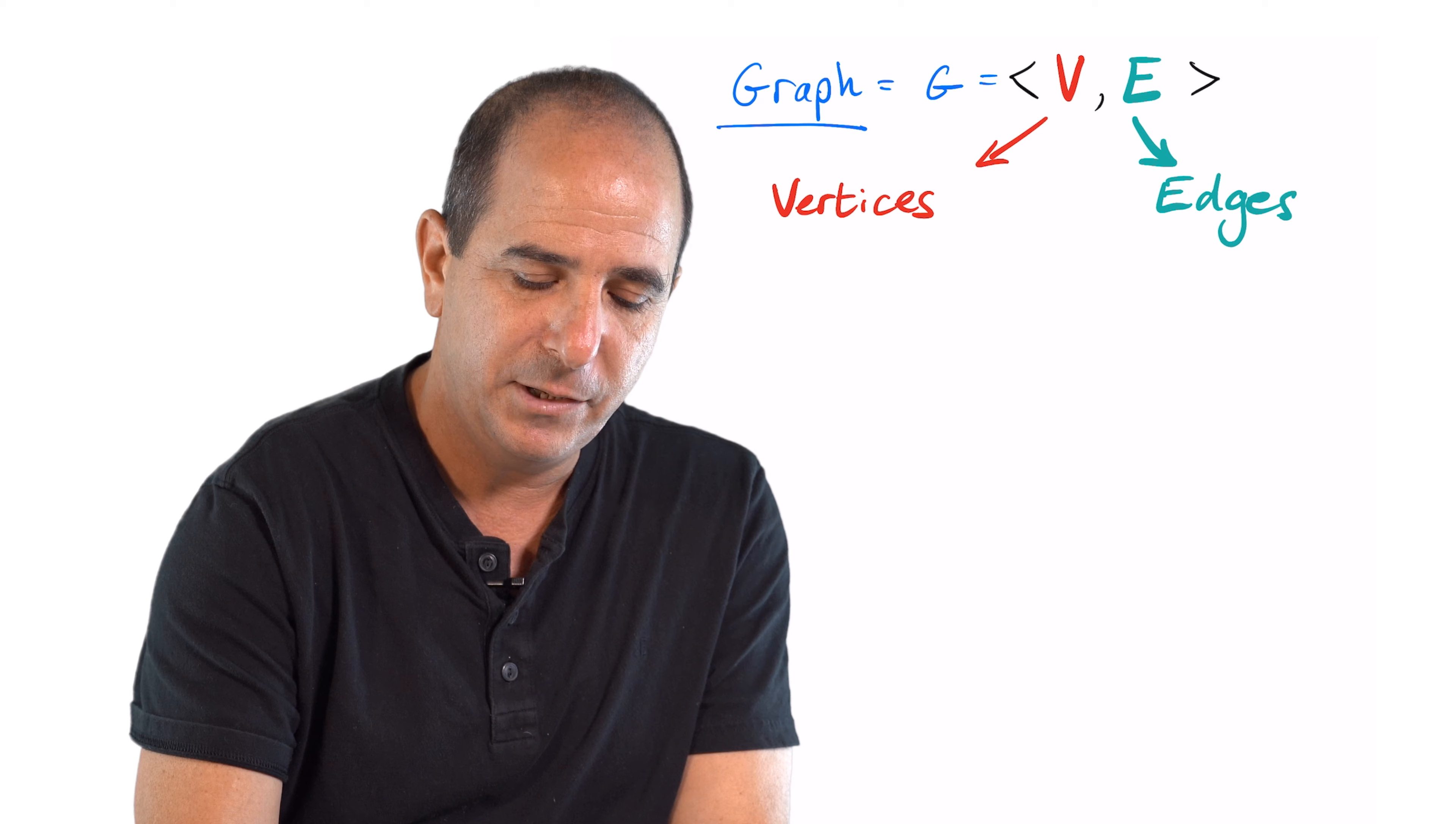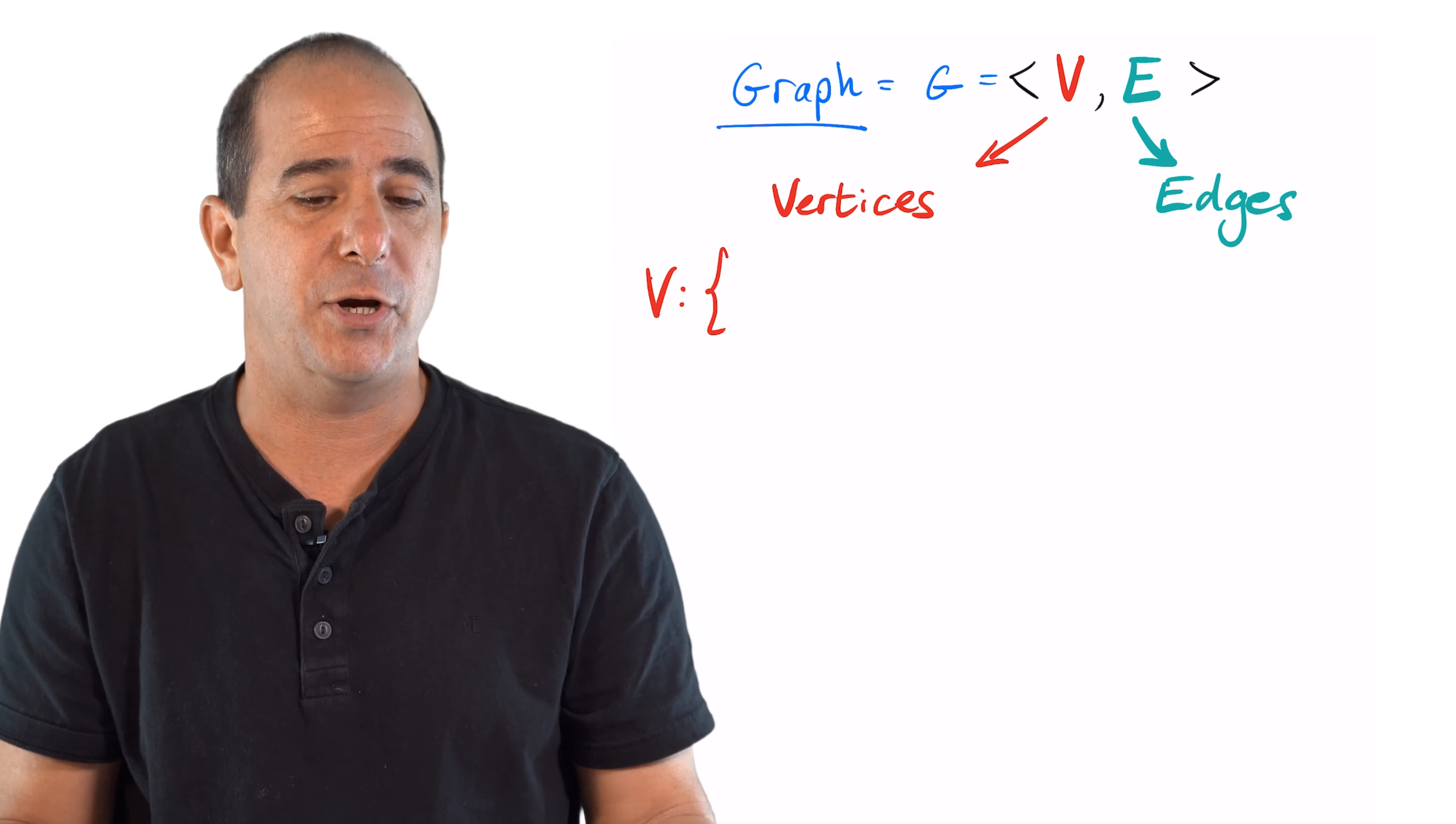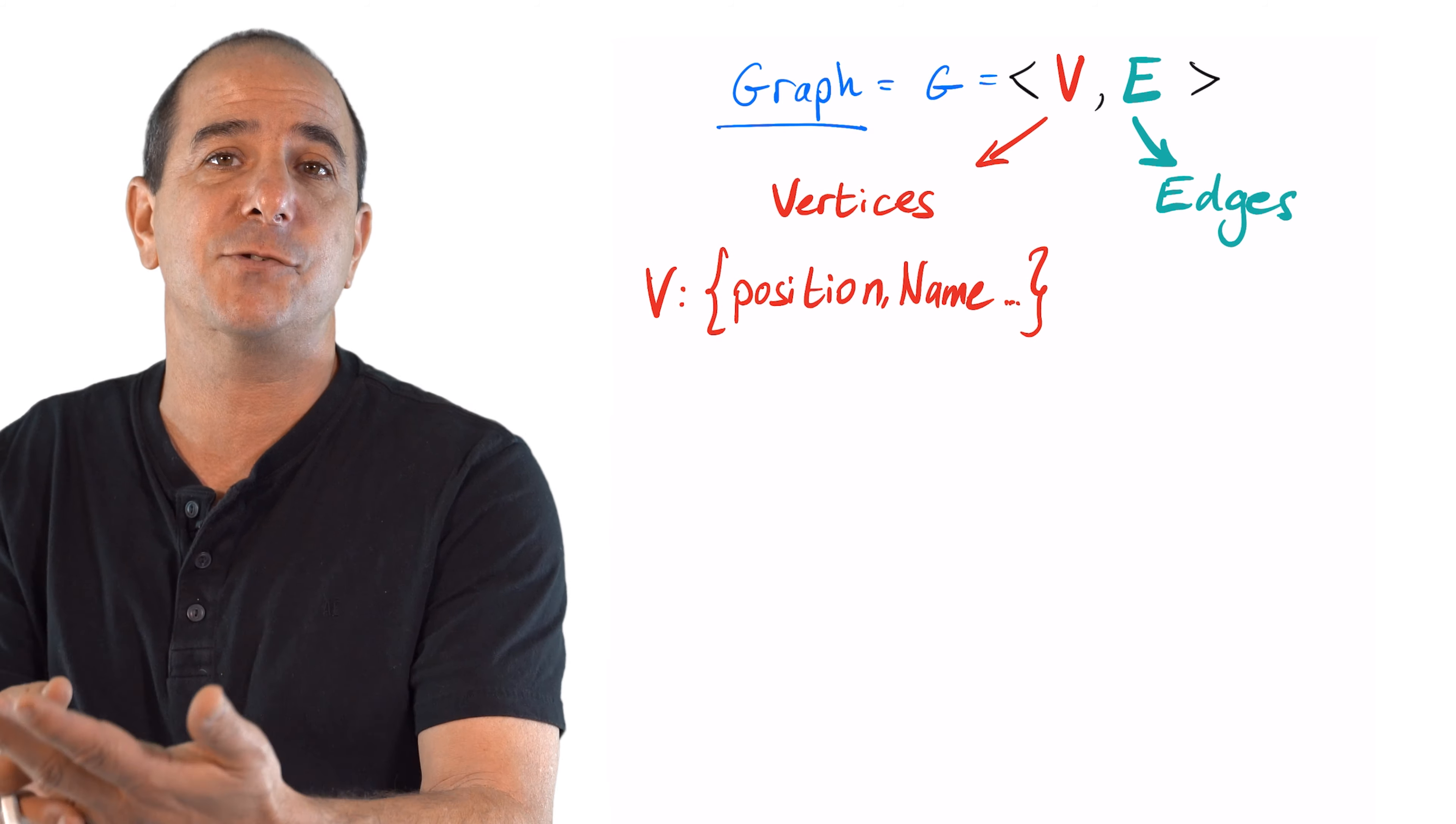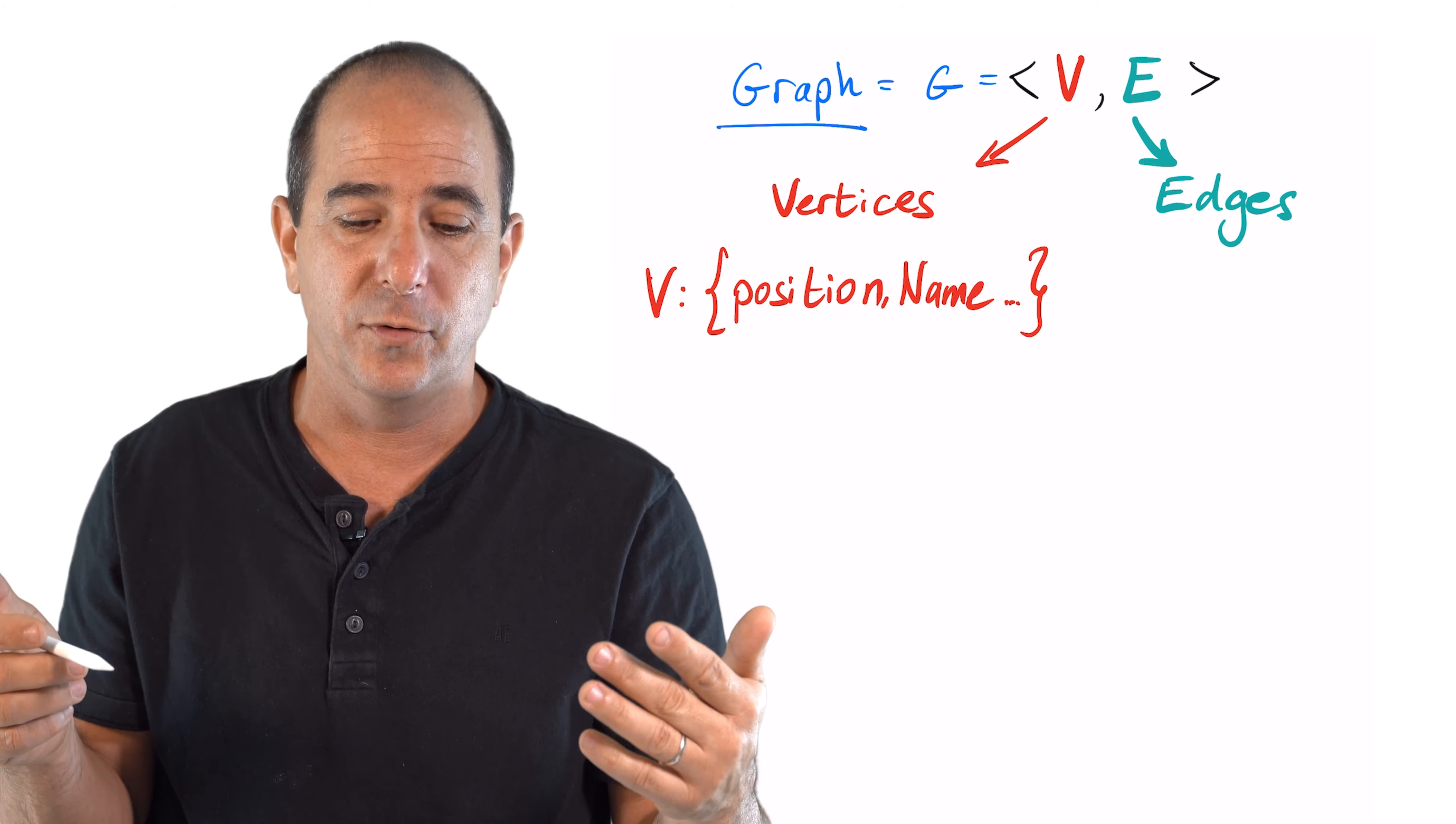V could be thought of, in the case of a road network, as an intersection. The intersection may have the property of position and name and maybe some extra metadata. Its most important information is where you can go from this node.